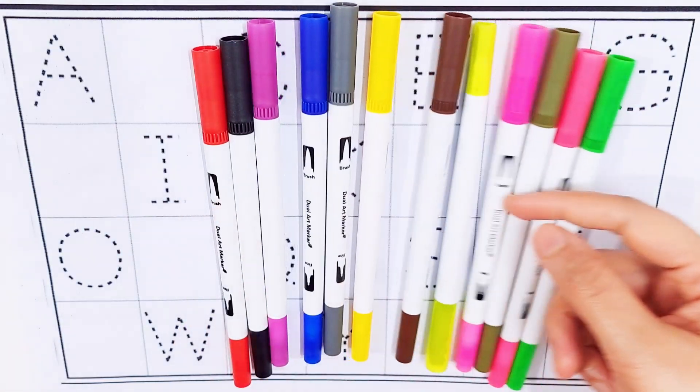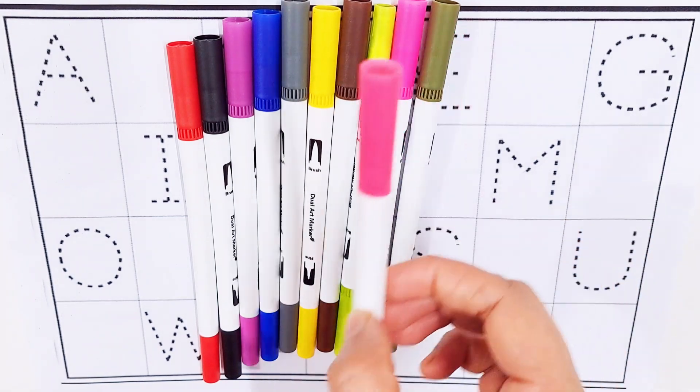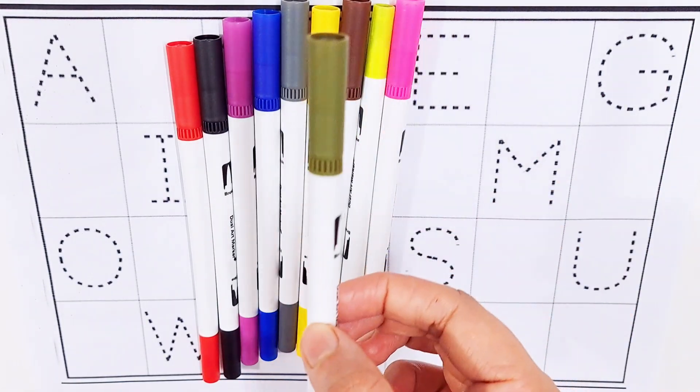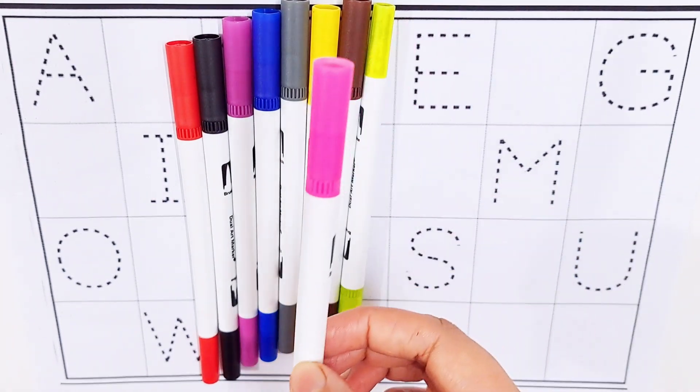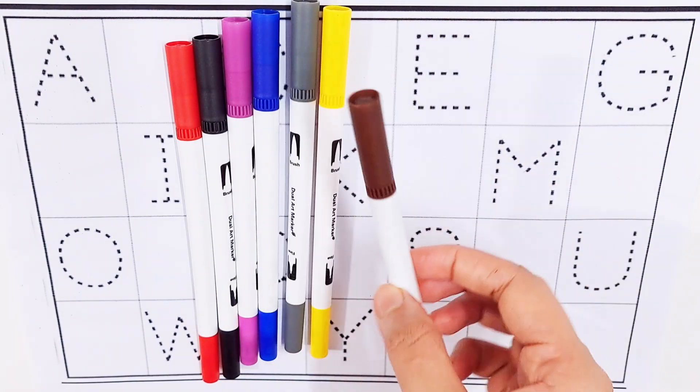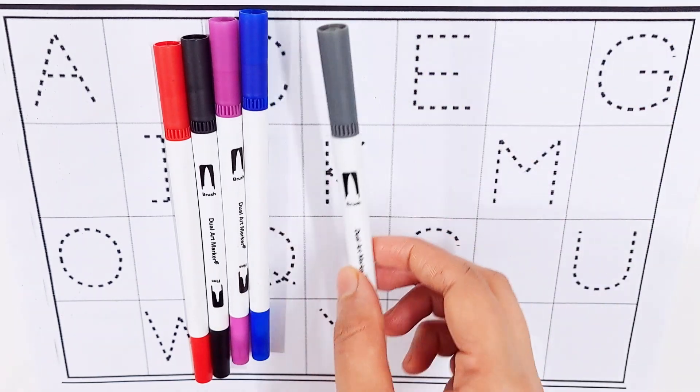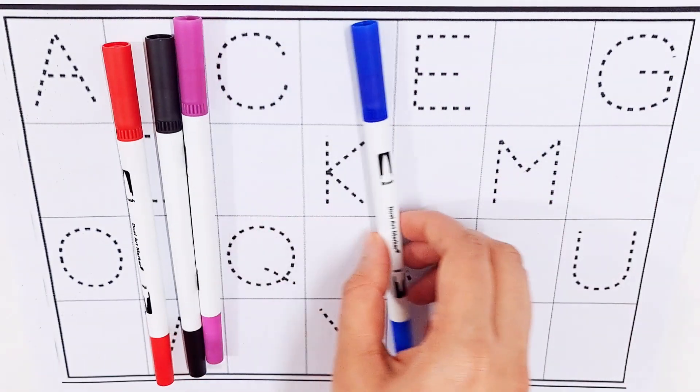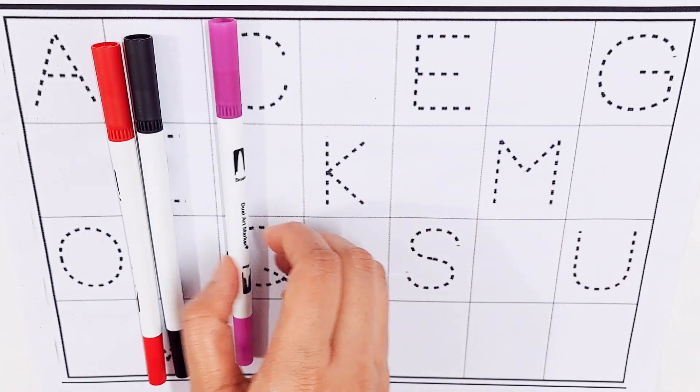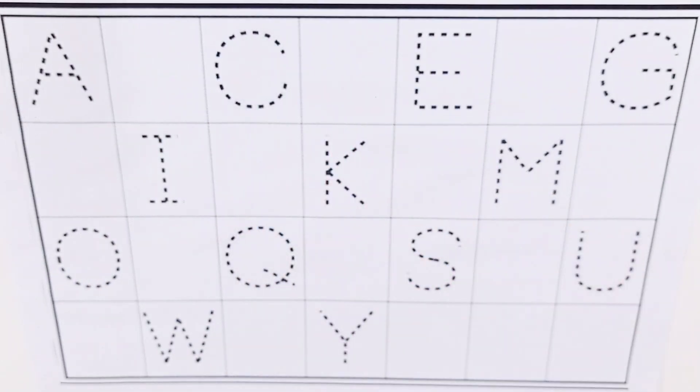Hello guys, let's learn some color names: green, pink, olive, purple, lime, brown, yellow, gray, dark blue, violet, black, and red.